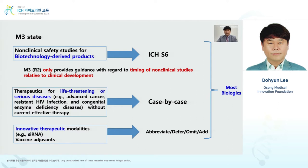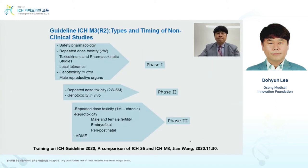In M3, it provides guidance with regard to timing of non-clinical studies relative to clinical development. For biologics, S6 must be referred to — in M3, it only talks about the timing. For life-threatening or serious diseases, a case-by-case approach must be applied. For innovative therapeutics, abbreviation, addition, and omission of studies are accepted. For most biologics, all these three cases can be applied.